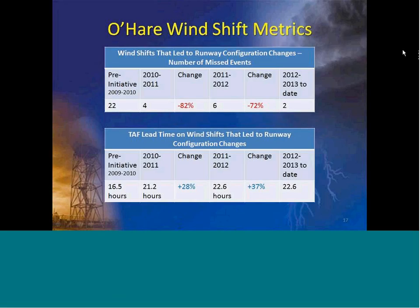Here are a couple of the wind shift metrics. In our pre-initiative period we had basically 22 missed wind shift events, when we weren't really aware of what wind shifts the FAA was looking for — what degree of change and what direction range caused them issues. We didn't have that awareness. Post-initiative, a couple years' worth of data, and you go from basically 22 missed events to just a handful. You look at the hours of lead time — basically a day in advance of some of these wind shifts, and doing very well within the timeframe. Just that awareness of what's important to them and addressing it from a weather perspective can have a huge impact on the ultimate result for their operation.